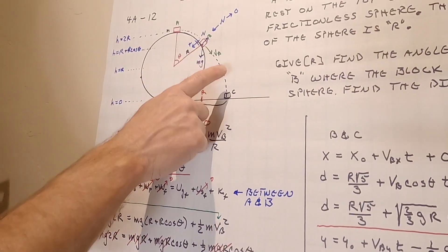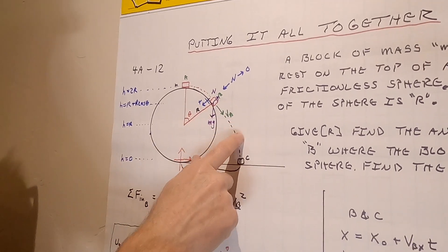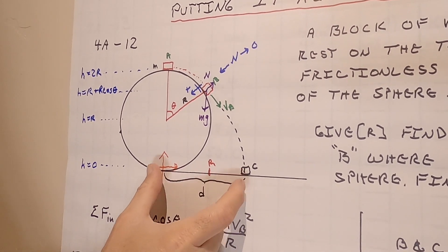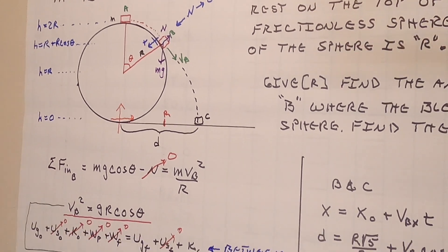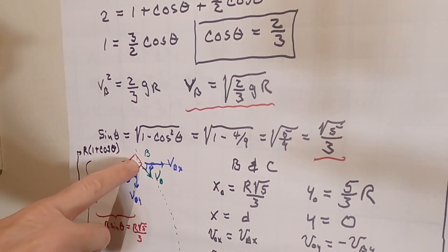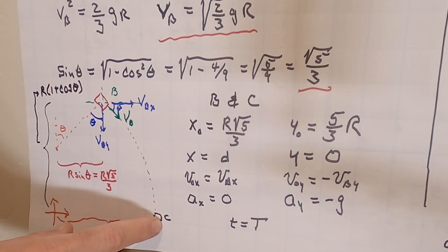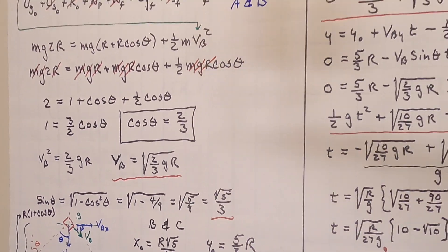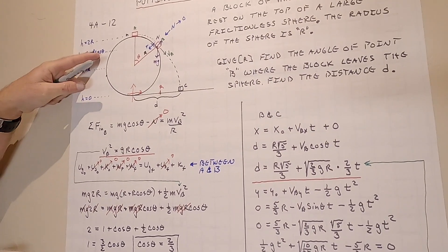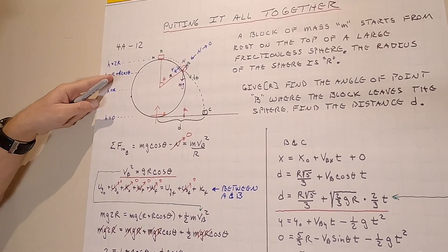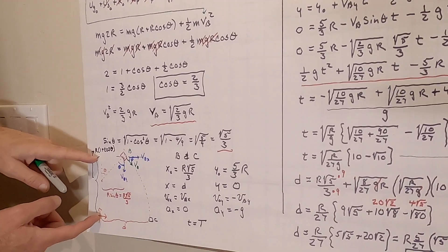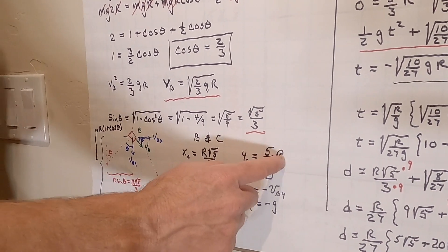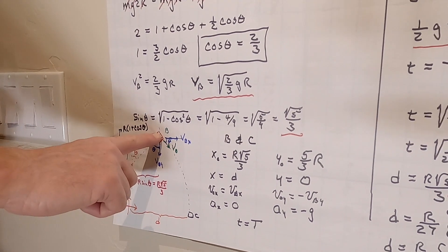From the departure point to landing is a projectile problem. I'll put the origin at the base of the sphere. The initial height of the projectile is r + r·cosθ = r + (2/3)r = (5/3)r. The horizontal offset from the origin to the launch point is r·sinθ = r·√5/3. The final y is zero — that's the ground.